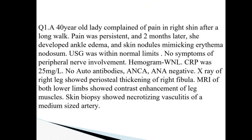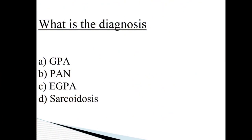Second clinical scenario: a 40-year-old lady complained of pain in the right shin after a long walk; the pain was persistent. Two months later she developed ankle edema and skin nodules mimicking erythema nodosum. USG was within normal limits. No symptoms of peripheral nerve involvement. Hemogram was normal. CRP was 25 mg/L. No auto-antibodies — ANCA and ANA negative. X-ray of the right leg showed periosteal thickening of the right fibula. MRI of both lower limbs showed contrast enhancement of leg muscles. Skin biopsy showed necrotizing vasculitis of a medium-sized artery. What is the diagnosis — GPA, PAN, EGPA, or sarcoidosis?